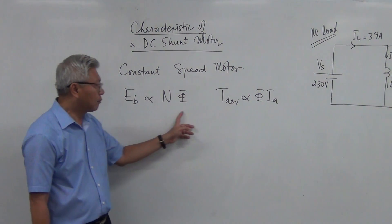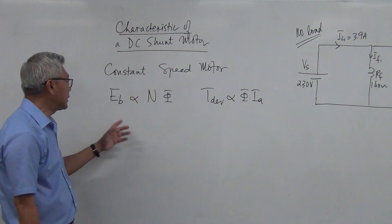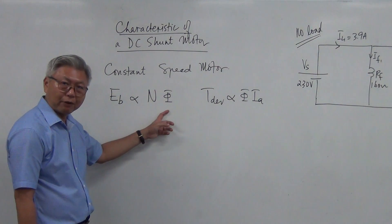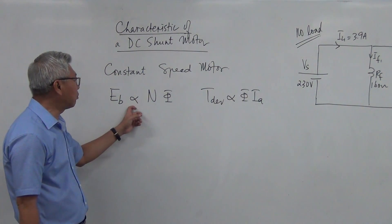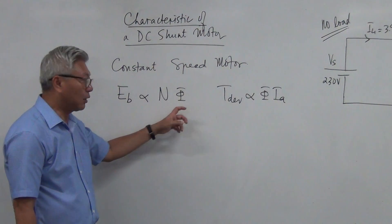The basic formula that we need to use is Eb is proportional to n times flux. Back EMF is proportional to speed and magnetic flux.